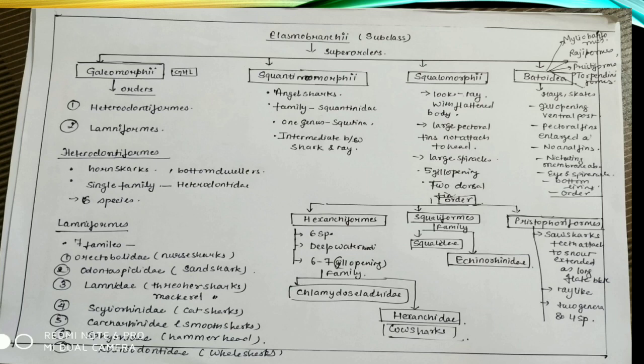Lamniformes have total seven families. They are Orectolobidae (nurse sharks), Odontaspididae (sand sharks), Lamnidae (mackerel sharks), Scyliorhinidae (cat sharks), Carcharhinidae (smooth sharks and hammerhead).